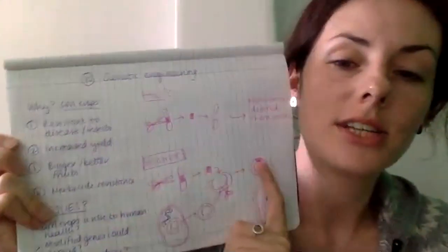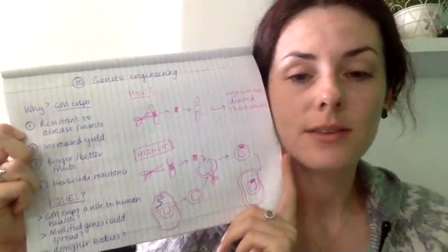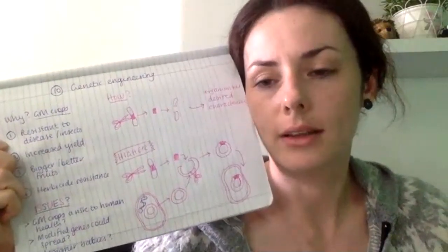Sana correctly identified restriction enzyme — that's exactly what the scissors represent, and it's really specific. For AQA GCSE spec, you don't actually need to use the word 'restriction' — that's saved for A-level — but you could call it a restriction enzyme. That covers everything on genetic engineering. Alice, let me know if any part needs more detail.